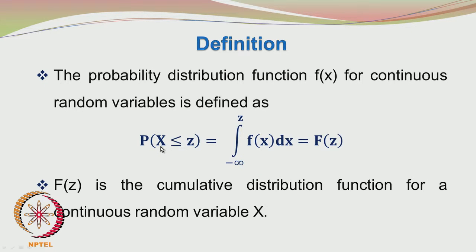Coming to the definition of the probability density function: the probability of the random variable taking a value less than or equal to z is obtained by putting z as the upper limit of the integral, giving us F(z). This F(z) is the cumulative distribution function for the continuous random variable x. It is as if you are accumulating or aggregating the probabilities up to z. Earlier we used the sigma sign for adding up probabilities; now we use the integral sign.